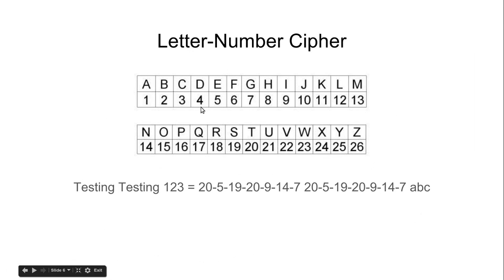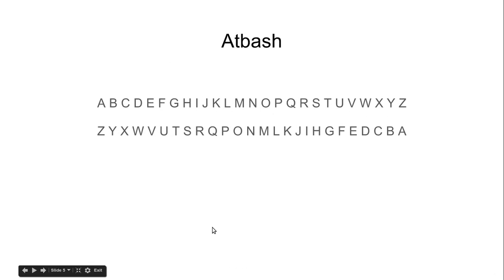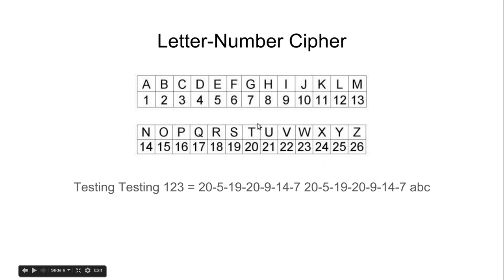Next cipher: the letter-number cipher. This is kind of something that everybody could probably just make up — it's like A equals 1, B equals 2, C equals 3, et cetera. That's just a simple cipher. An example would be 'testing testing 1 2 3' again. You add dashes in between each letter but spaces to separate words. So 20 is T, E is 5, et cetera. The person receiving the code can solve it from that.